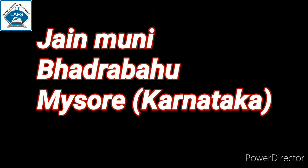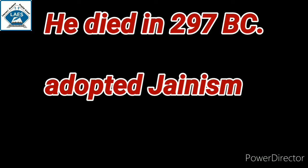Chandragupta spent the last time of his life with Jain Muni Bhadrabahu in Shravanabelagola of Mysore, now Karnataka. He died in 297 BC. His 24 years of rule over the state and his adoption of Jainism in the last years of his life is found described in Jain Purans.